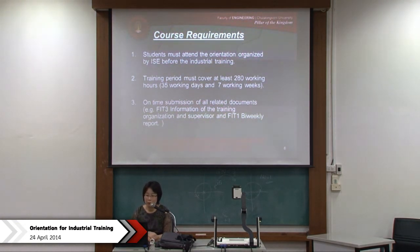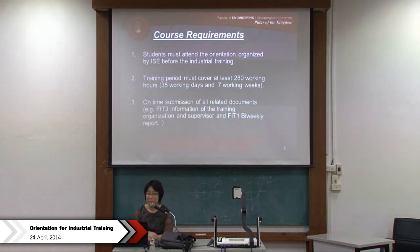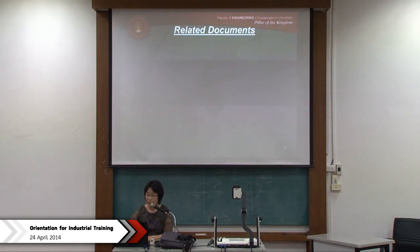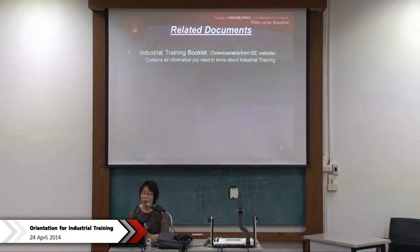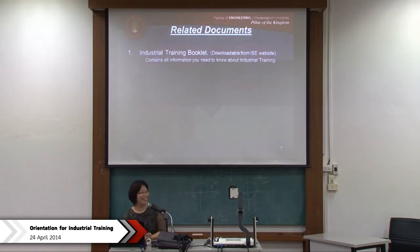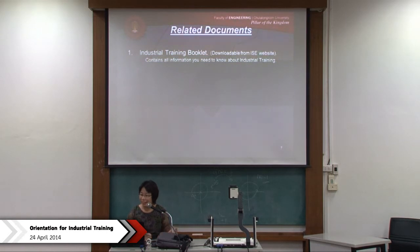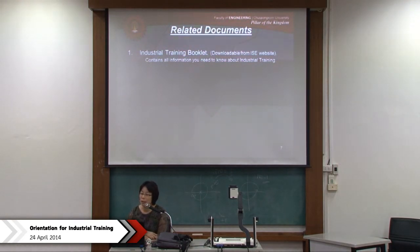Those are the three major requirements. If you fail to comply with any of them, you will automatically receive a U grade — Unsatisfactory. Now regarding the related documents: the first is the industrial training booklet, which is downloadable from the ISE website. It contains all the information you need to know about industrial training. PME is in the process of updating everything and will put it back on the website.